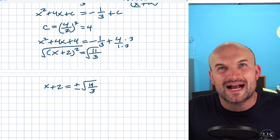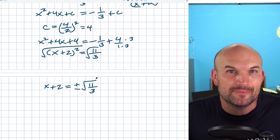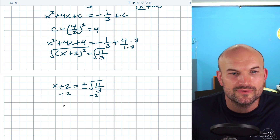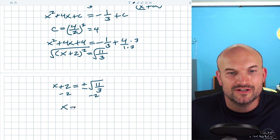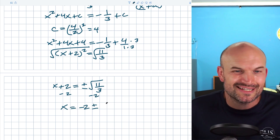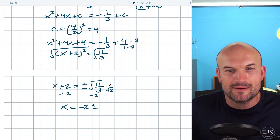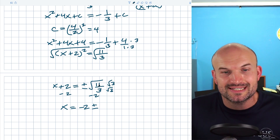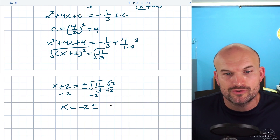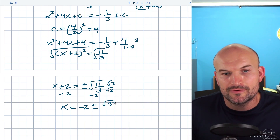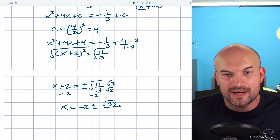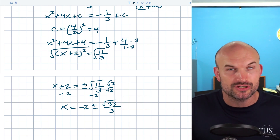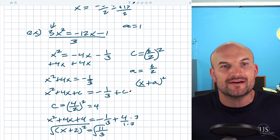I can't simplify that much, but let's rationalize the denominator by multiplying by √3/3. That distributes the 3 inside the radical giving √33/3. So the final answer is x = −2 ± √33/3. That is the solution to that equation. Just remember: whenever you have a leading coefficient other than 1, divide everything by that coefficient first.